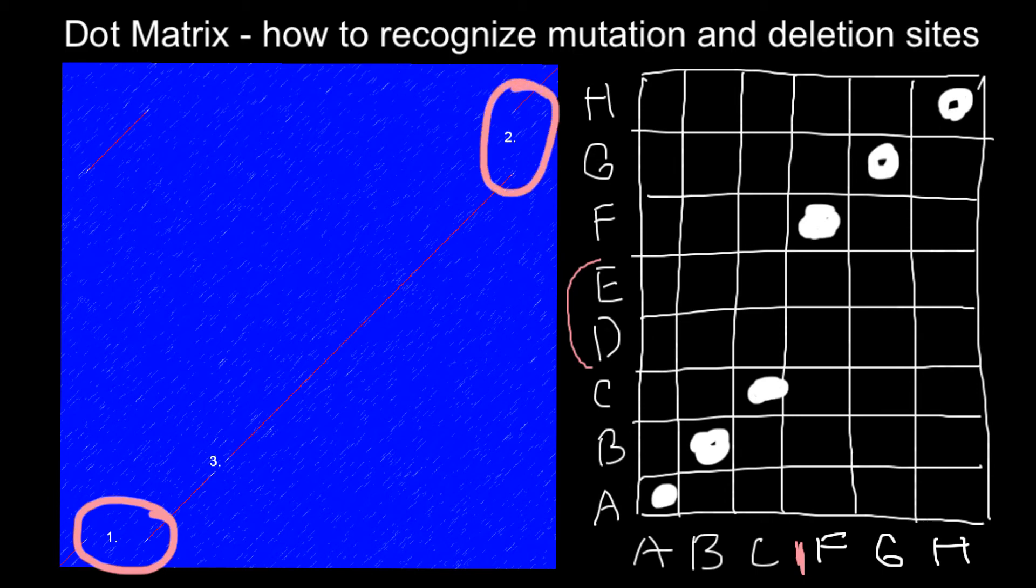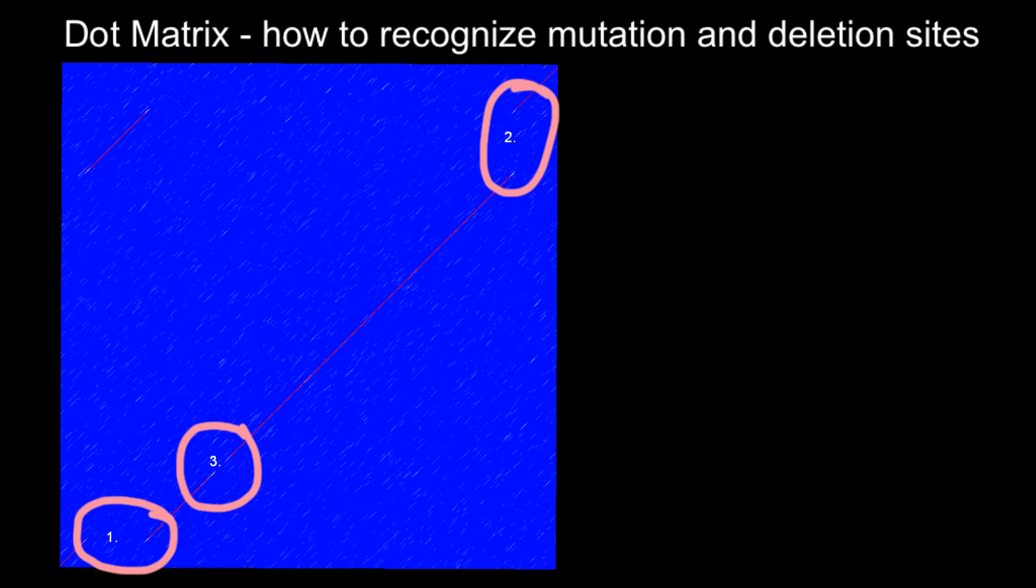Now we've already talked about this situation and this situation. Let's talk about example three, when we have a perfect straight line with a gap in the middle. Imagine that this time our proteins would be as follows: A, B, C, D, E, F, and G.